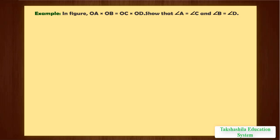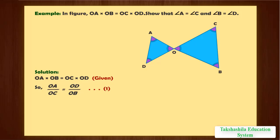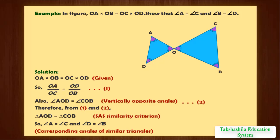Let us take an example. In the figure, OA into OB equals OC into OD. Show that angle A equals angle C and angle B equals angle D. We are given OA into OB equals OC into OD, so OA upon OC equals OD upon OB. This is equation 1. Also, angle AOD equals angle COB as they are vertically opposite angles. This is equation 2. Therefore, from equations 1 and 2, triangle AOD is similar to triangle COB by SAS similarity criterion. So, angle A equals angle C and angle D equals angle B, as corresponding angles of similar triangles are equal.